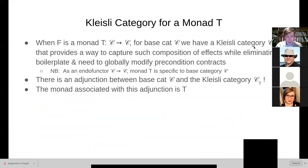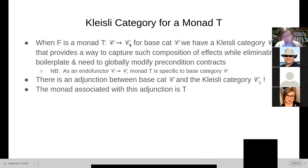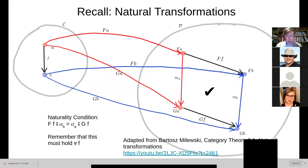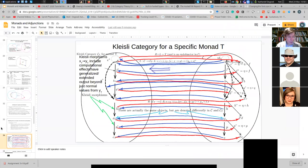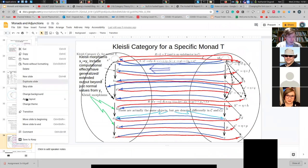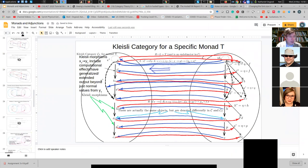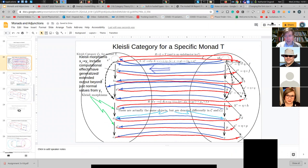We're going to have this Kleisli category, which is going to basically have arrows that are these types of operations. This Kleisli category will allow us to compose these things nicely — we'll have Kleisli composition in which any of those can be composed. And in fact there's a nice relationship between the base category C — say Hask — and the Kleisli category for it. There's an adjunction between them. I want to remind you about natural transformations, and then we'll get on to this Kleisli category. So here's the Kleisli category.